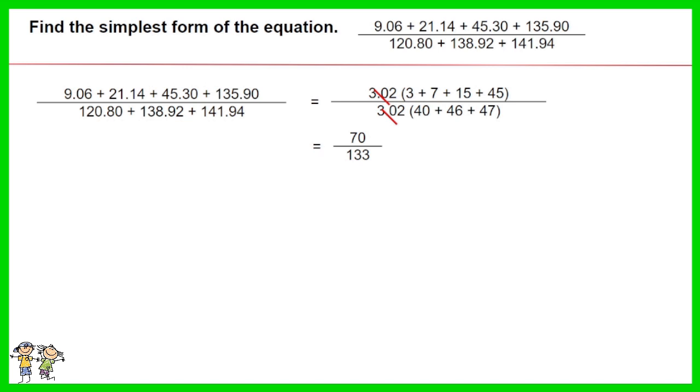The equation is equal to 70 over 133, and in simplest form it is 10 over 19.